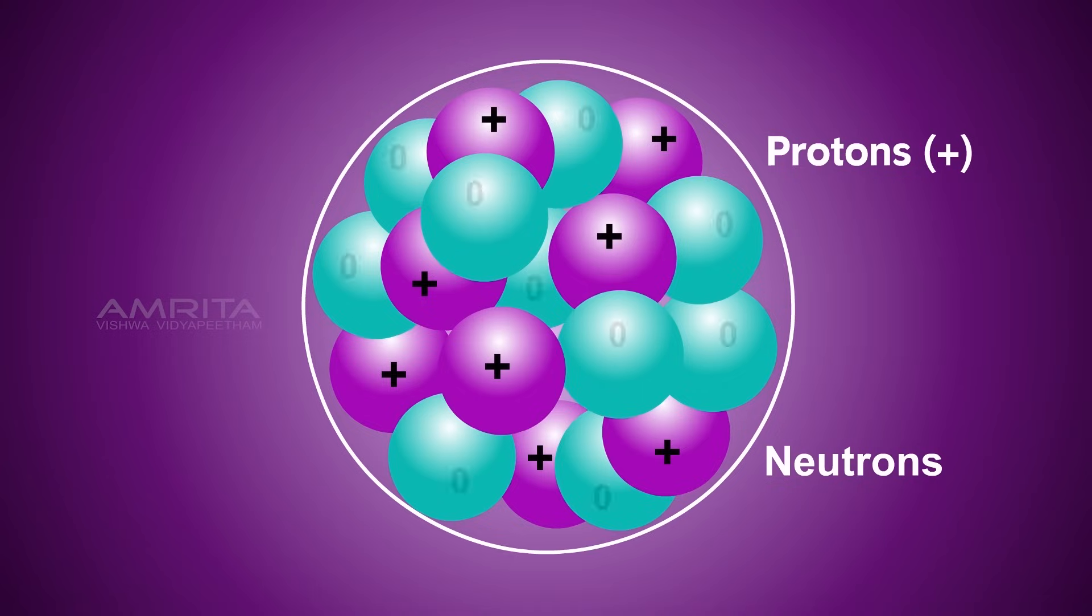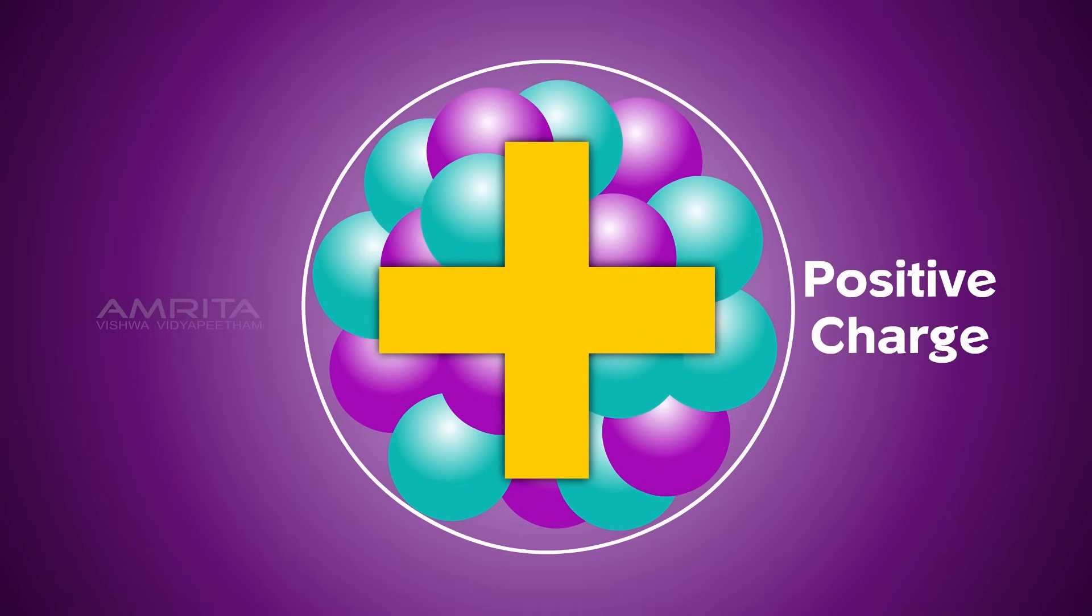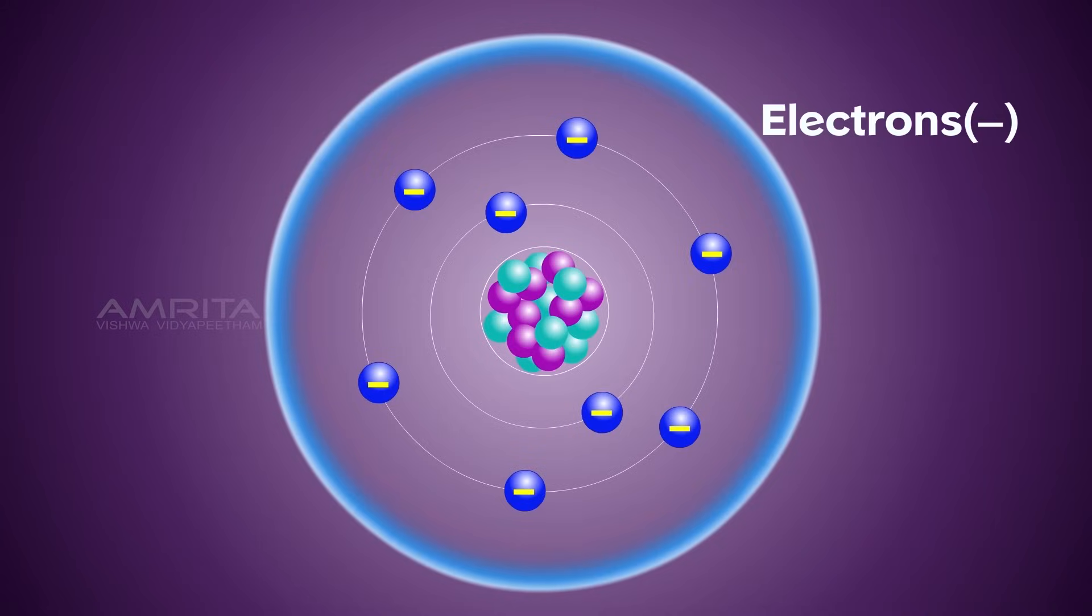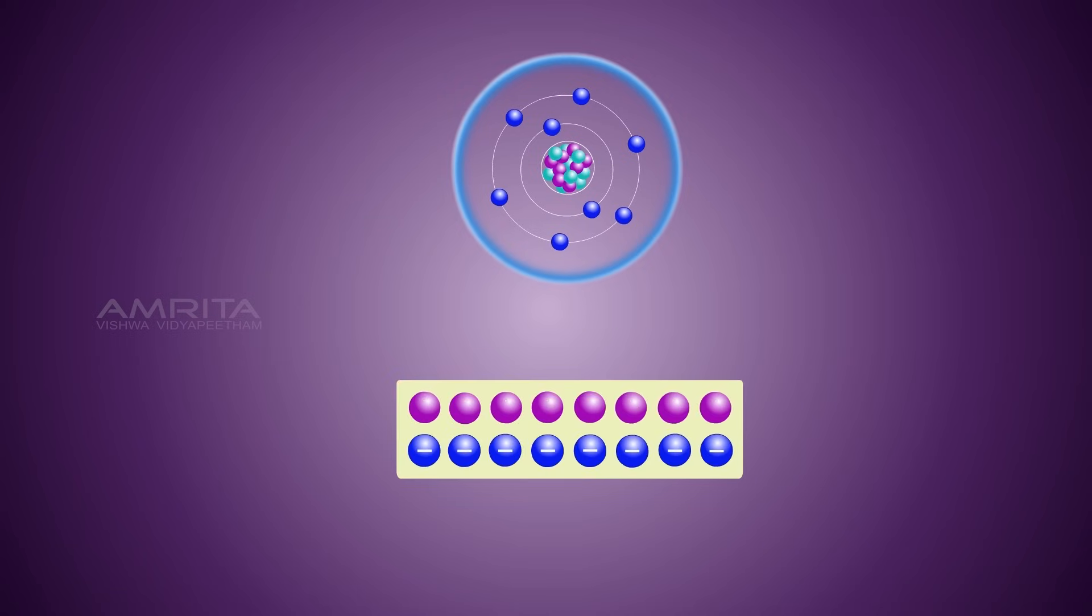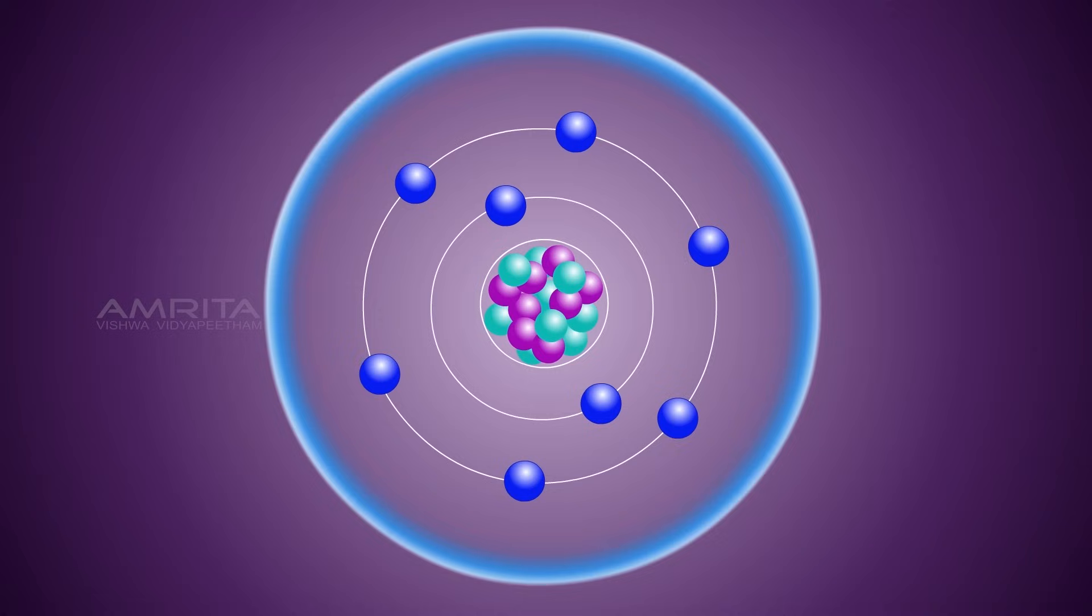Protons are positively charged and neutrons have no charge, so the nucleus is positively charged. Protons and neutrons are collectively called nucleons. Electrons are negatively charged and are located around the nucleus. An atom has the same number of negatively charged electrons as it has positively charged protons in the nucleus. Therefore, atoms are electrically neutral.